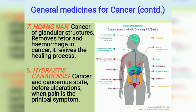After Echinaceae and Gallium, another medicine is Hoang Nan for cancer of glandular structures. It removes foetor and hemorrhage in cancer and revives the healing process. This covers glandular cancer, foetor, and hemorrhage — similar to what Cinnamonum and Carbonium Sulphuratum cover — and the healing process, similar to Gallium Aparine.